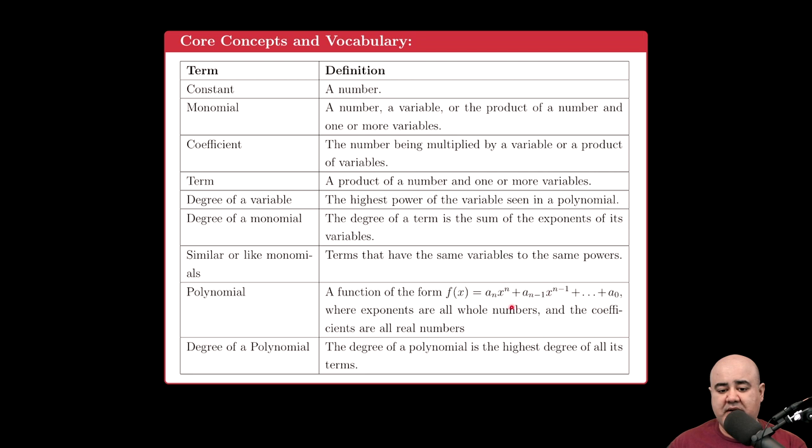Times x raised to the n plus a sub n minus 1. Now this is just counting them down. So if the first coefficient is a sub n, the next coefficient is a sub n minus 1. Then the next coefficient would be a sub n minus 2. And the next one would be n minus 3, a sub n minus 4,